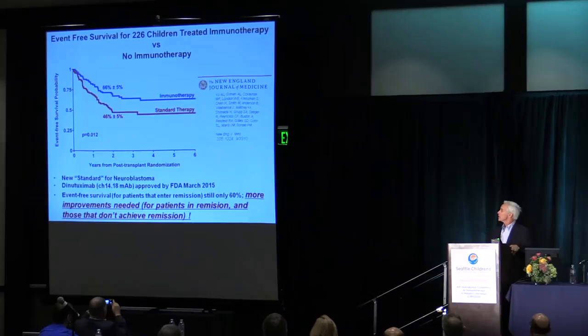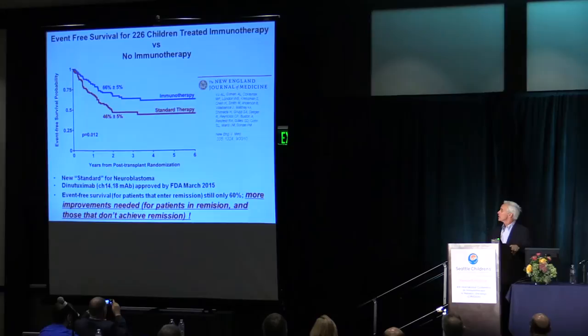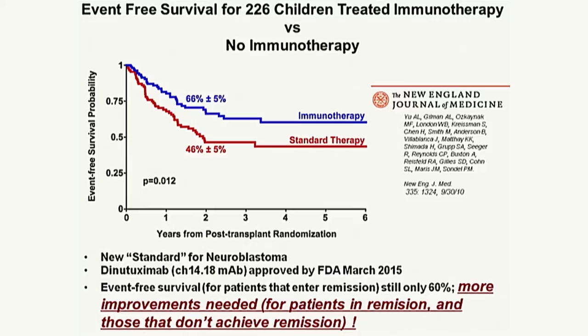We did a large randomized study. Children who had gone through upfront chemotherapy, autologous transplant, surgery, and radiation therapy were then randomized to either retinoic acid or retinoic acid plus this immunotherapy regimen. Those receiving immunotherapy did better in both event-free survival and overall survival. This has become the standard COG approach for neuroblastoma centers around the world. However, 60% of these patients who made it through transplant are still relapsing — we've got to do something much better.